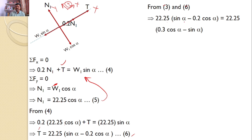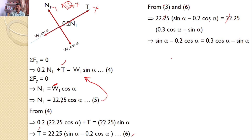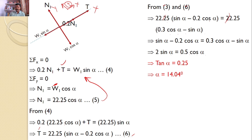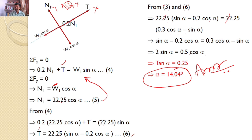Equating the two expressions for T from equations 3 and 6: 22.25 (sin α − 0.2 cos α) = 22.25 (0.3 cos α − sin α). Simplifying: 2 sin α = 0.5 cos α, which gives tan α = 0.25, and therefore alpha = 14.04 degrees. This is the answer for the given problem.